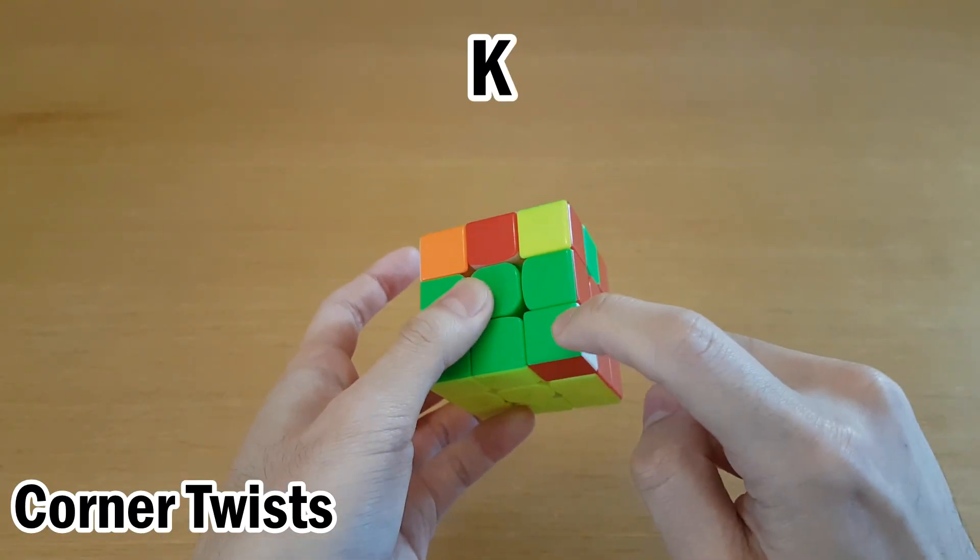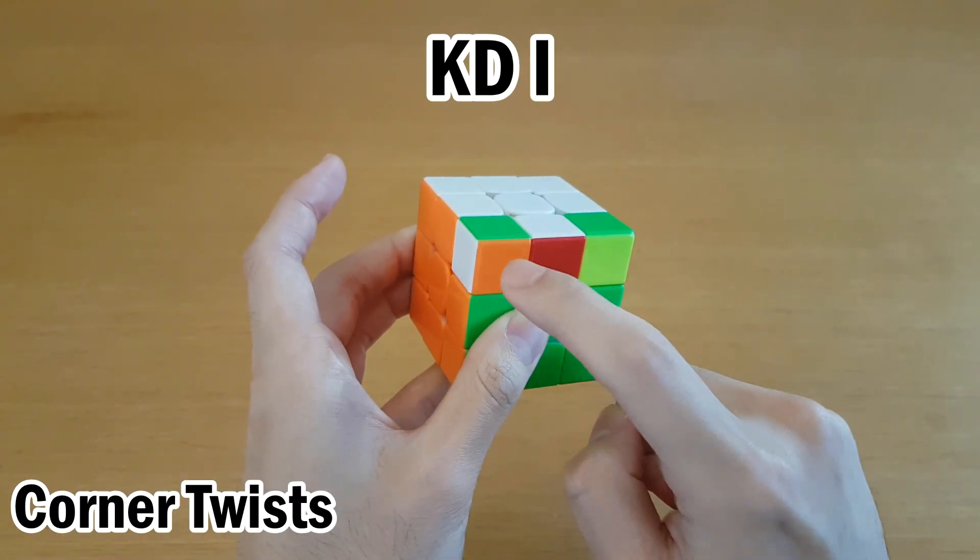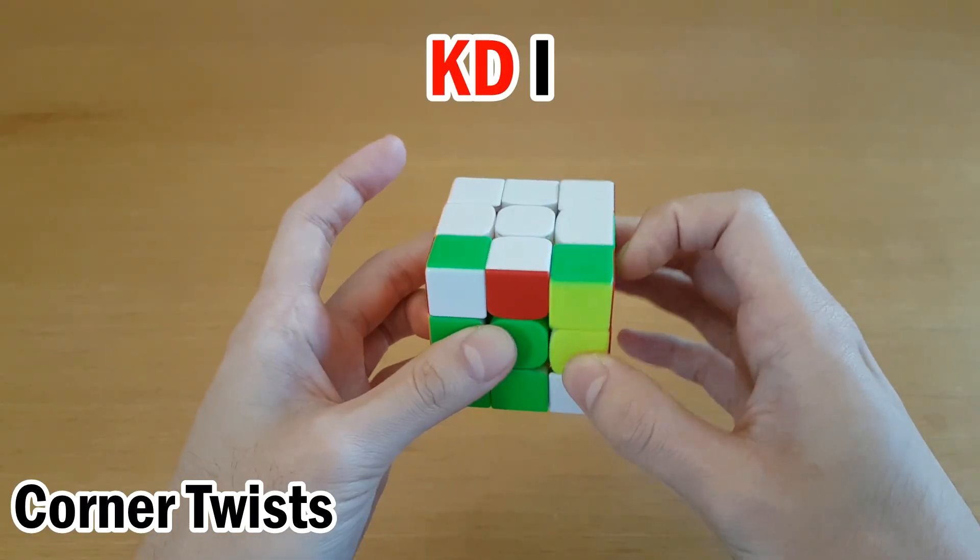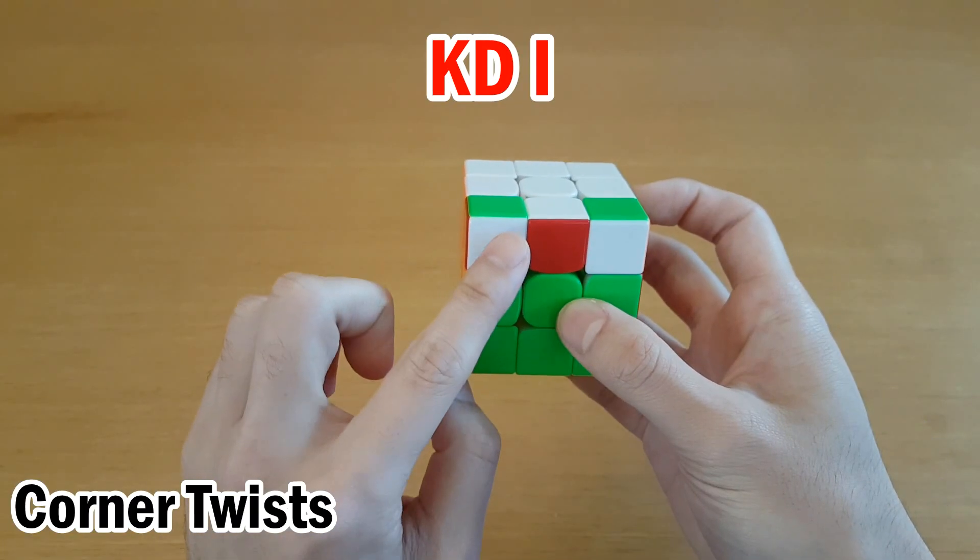For example, this case, I would do KD followed by I parity. So KD and then parity for I.